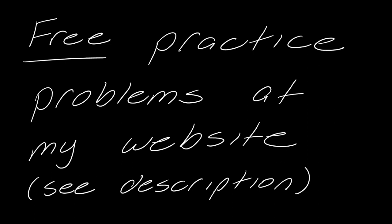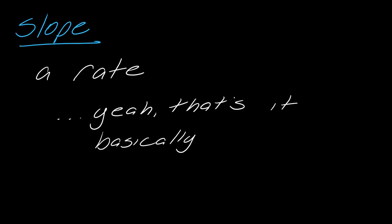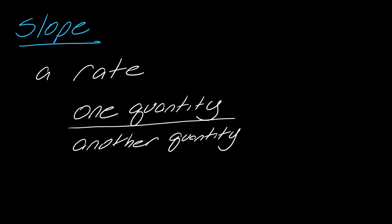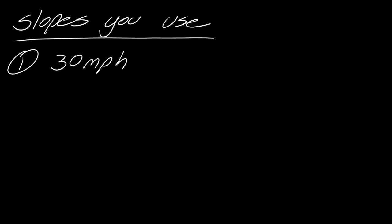We first need to talk about slope — slope is a rate, that's basically it. A lot of times when we think about slope from a mathematical standpoint, we think of one quantity over another quantity, and it's usually a change in those quantities. You might remember from your algebra days the statement 'rise over run.' So I'm going to show you how you're going to use slope in terms of heating and cooling, but first we just need to talk a little more about what a slope is.